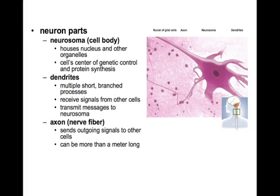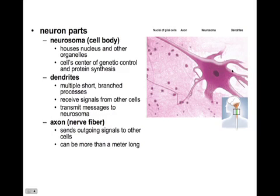The neuron has three main parts: the neurosoma, or cell body; dendrites, which are short, branched processes that receive signals from other cells and transmit the message into the soma; and if there's enough stimulus, the signal will be transmitted along the axon of the nerve fiber — that's where the outgoing signal goes to other cells. These axons can be more than a meter long.